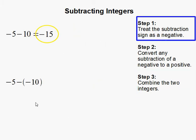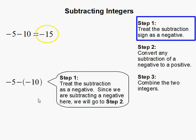Now let's move on to the second problem. In step 1 we're going to treat the subtraction sign as a negative. However, since we are subtracting a negative, we will just move to step 2 here.